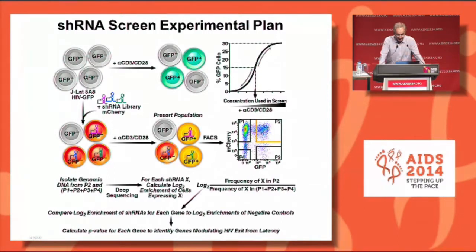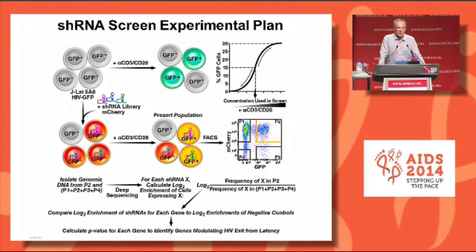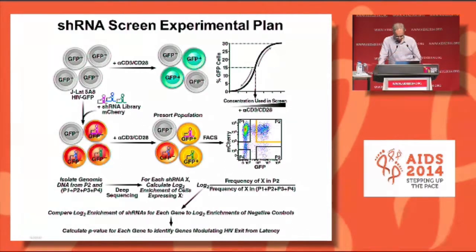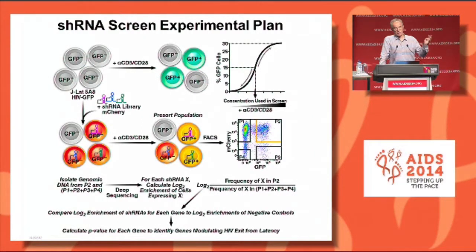The enriched population and the total population were subjected to deep sequencing to look for the presence of each shRNA, allowing us to determine for each shRNA whether it was enriched, disenriched, or neutral in the two populations. By looking at 25 different shRNAs per gene, we were able to use statistical analysis — the Mann-Whitney test — to detect which genes were enriched or disenriched in latency reactivation.